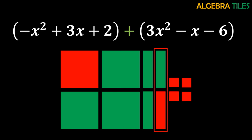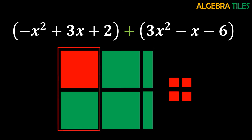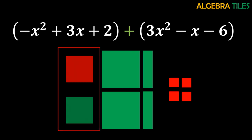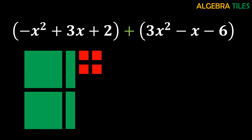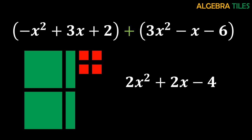After removing all zero pairs, we are left with the remaining tiles. By visualizing these tiles you can easily read off the answer: 2x squared, 2x, and negative 4. You have positive 2x squared because the remaining x squared tiles are green; positive 2x because the remaining x tiles are green; and negative 4 because the remaining ones tiles are red. This is how you interpret the tiles and rewrite your answer.